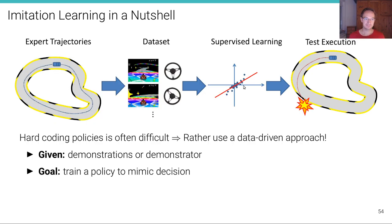Here is imitation learning in a nutshell. The motivation is, well, hard coding policies is often very difficult, so we rather use a data-driven approach, where given demonstrations from an expert, or access even to a demonstrator, the goal is to train a policy to mimic the decisions that the demonstrator has made. In other words, we're collecting some expert driving trajectories and the corresponding images. So the dataset comprises both the input as well as the steering and the brake and gas command. And then we try to simply fit a function that maps from the images to the actions, and execute and hope that the robot doesn't collide.